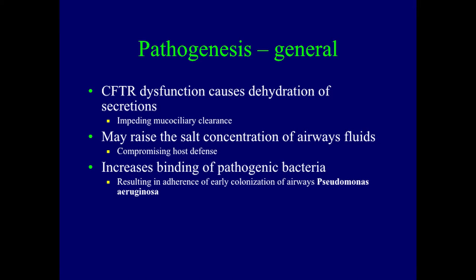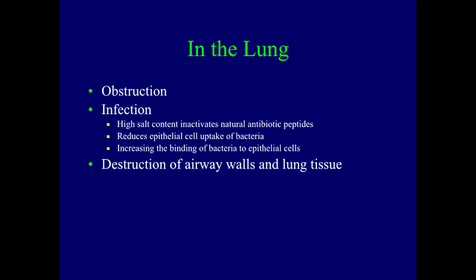In clear terms: there's obstruction in the airways because of thicker mucus, the mucus gets infected for a number of reasons, the salt content inactivates some natural antibiotic peptides in your airway, and it changes how the epithelial cell can fight bacteria while increasing bacteria's ability to bind to your cells. Ultimately, that infection destroys airway walls and lung tissue. The next slide shows a patient having surgery because they've had destruction of tissue and they have blebs — thin-walled balloon-like structures over part of the lung that can pop, caused by recurrent infection.